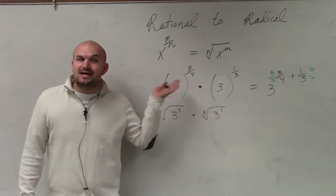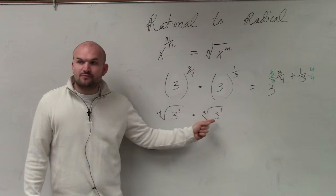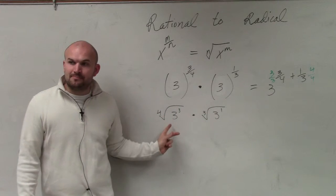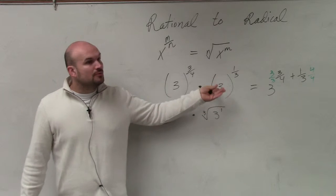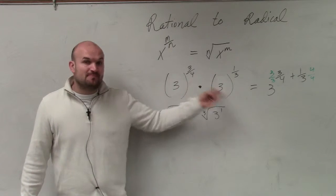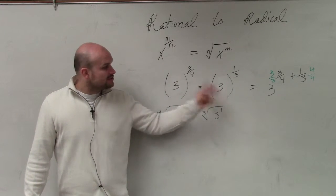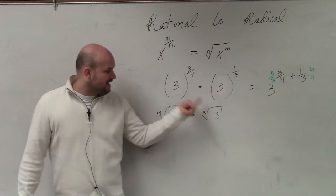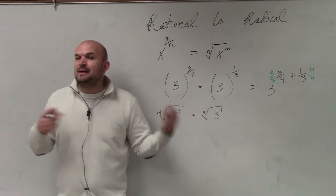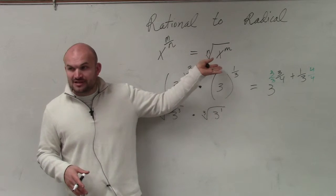If you guys remember what we did last class period, you can't multiply two different radicals if the roots aren't the same. So what we're going to do is we can multiply them when the bases are the same for exponents. So we're going to multiply them first, and then what I'm going to do is I'm going to rewrite my answer at the end in radical form from the rational.